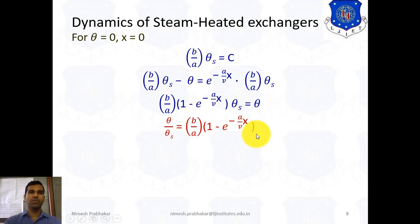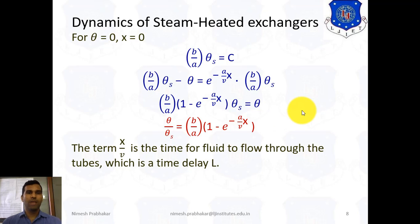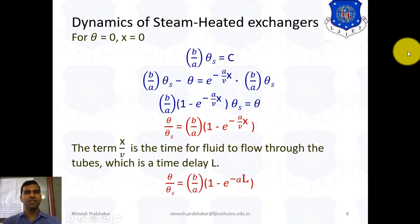This is the transfer function. We can write θ by θS as: θ/θS = (B/A)·(1 − e^(−AB·x)). Here, the term x/V represents the time delay. So we can write the final equation as: θ/θS = (B/A)·(1 − e^(−A·L)). This is the final equation describing the dynamic behavior of the steam heat exchanger.